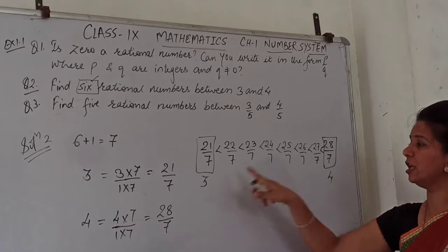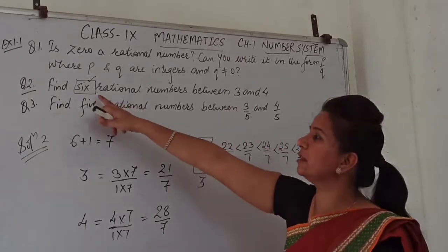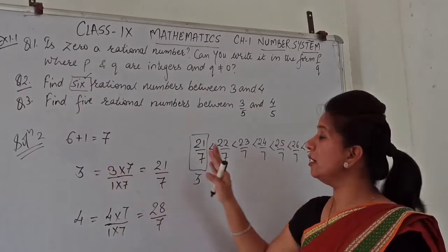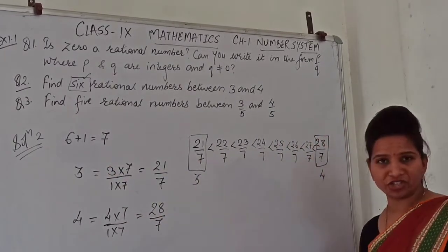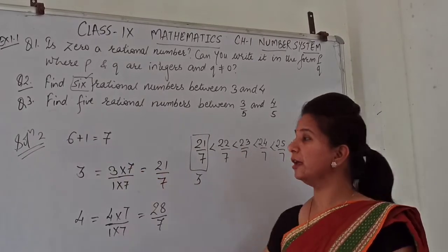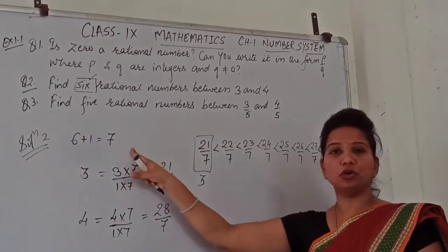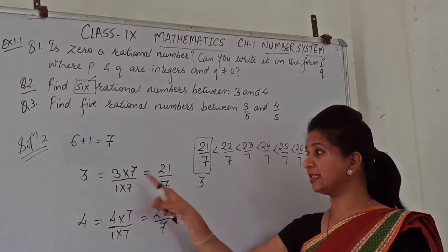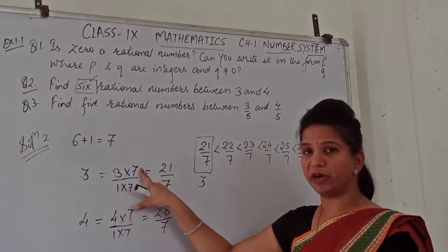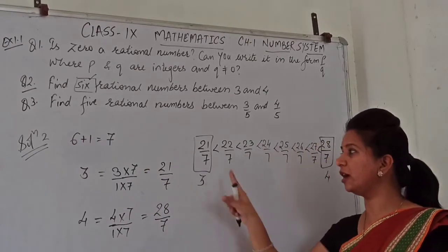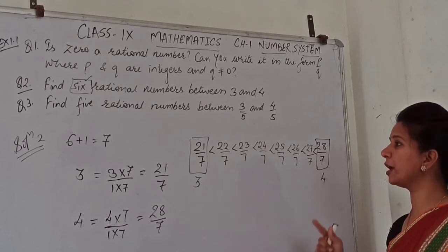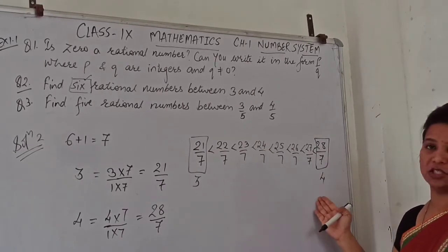So we have 6 rational numbers between 3 and 4. The method is to keep the denominator the same and increase the numerator. If we had not done this step, we would only have 5 rational numbers. The rule is: take n plus 1 as the denominator, convert both numbers to equivalent fractions, then list the numerators in between.